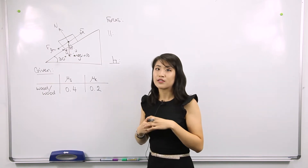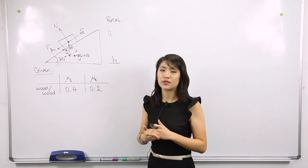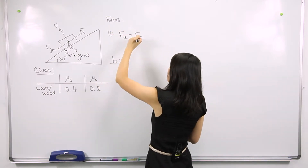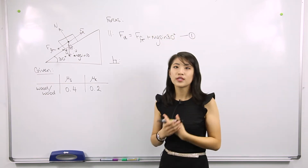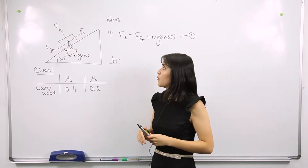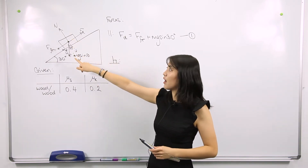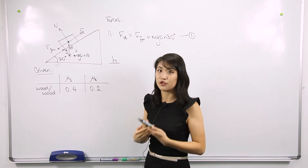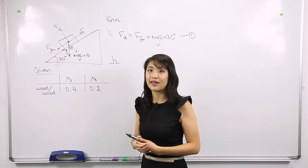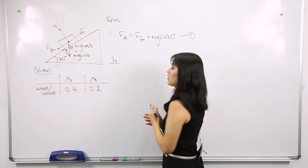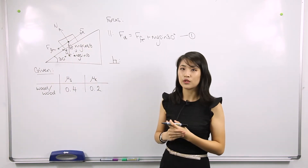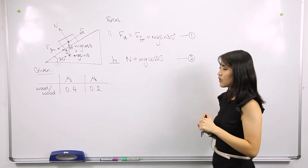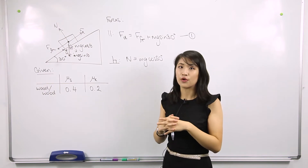Since the box is not moving, the forces acting up the slope are equal and opposite to those acting down the slope, which means we can create a force equation for the forces parallel to the slope. Similarly, for the forces acting perpendicular to the slope, we have an upward normal reaction force and a downward component of our weight force perpendicular to the slope, which using simple trigonometry is mg cos θ. The forces acting perpendicular to the slope are equal and opposite, i.e. the net force in the perpendicular direction is zero.